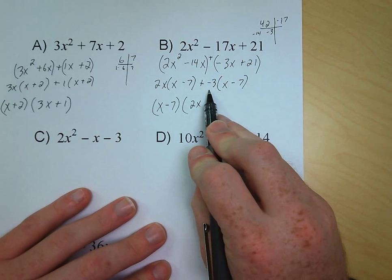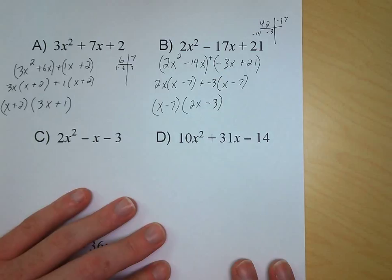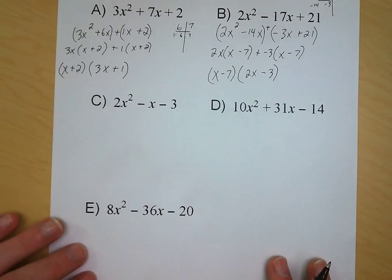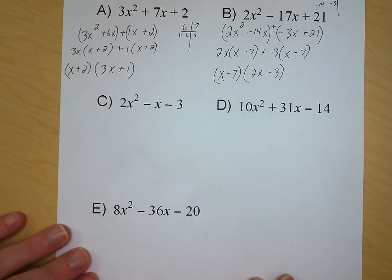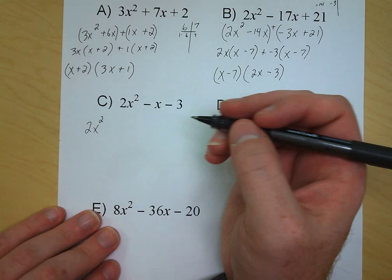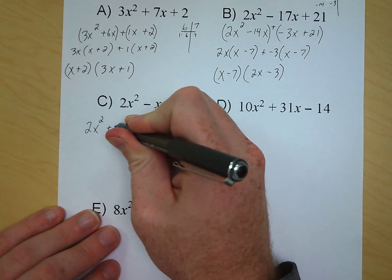Factoring by grouping does get a little tricky when you have to deal with negative signs. For letter C, we've got 2x squared minus x minus 3. We write our expression: 2x squared, and I know my factors are going to be negative 3x and positive 2x, so we write plus 2x minus 3x minus 3.